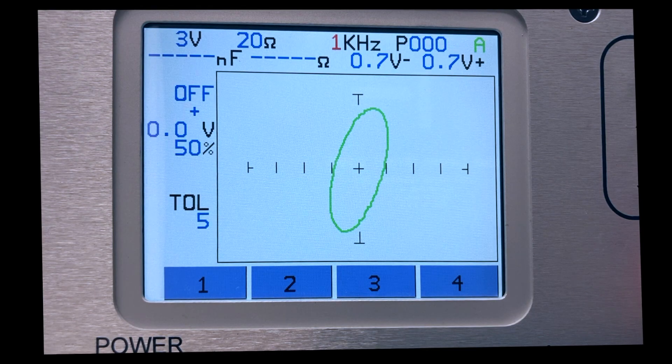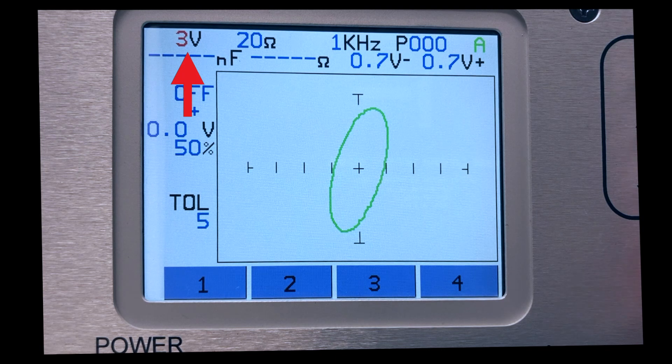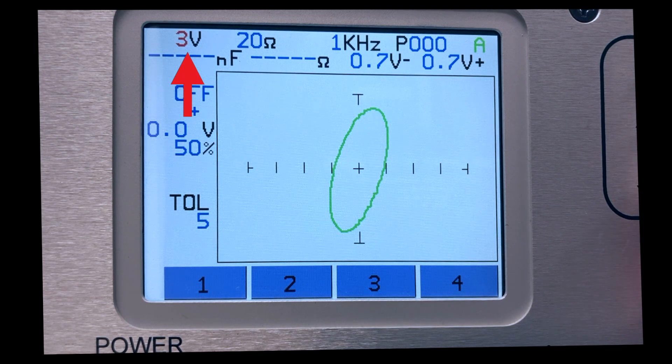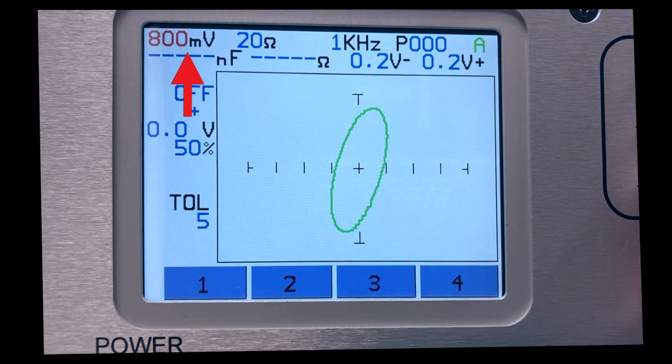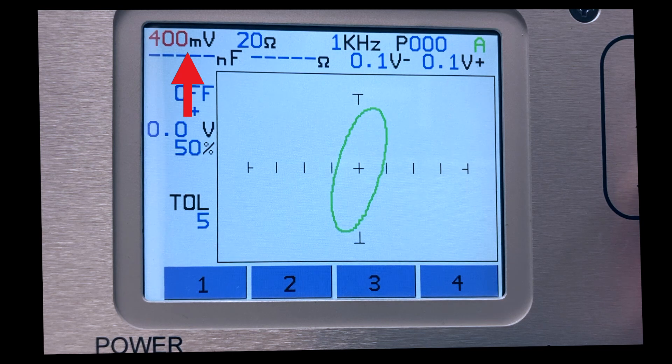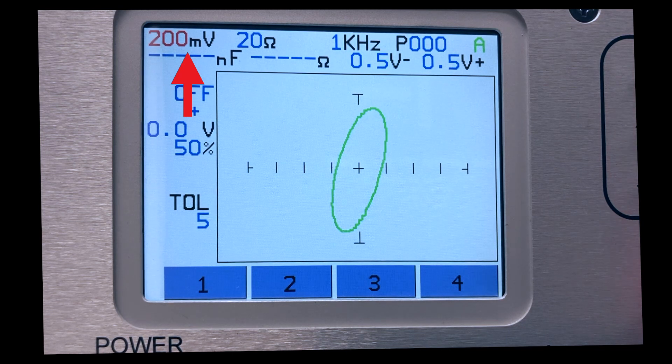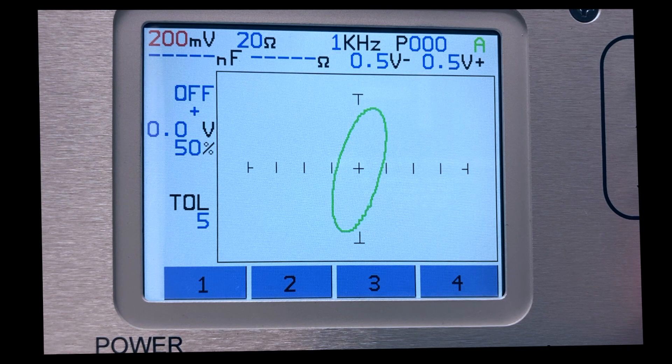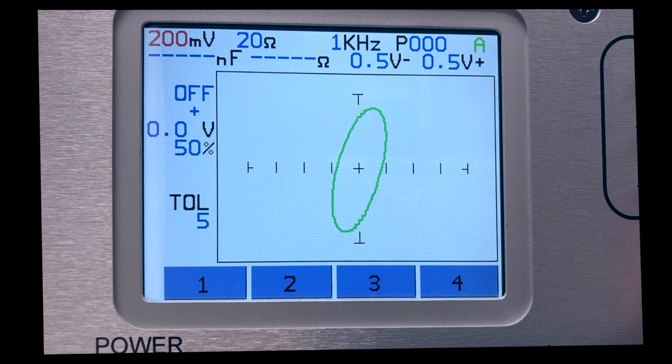As an example, here is the stepper motor winding using the tracker range of 3 volts, 20 ohms, at 1 kHz. The tracker voltage range is now changed to 200 millivolts. Notice the signature has not changed, so the voltage setting is not important to getting a usable analog signature.